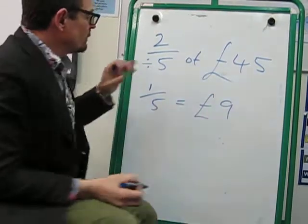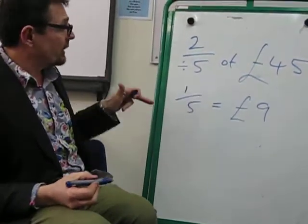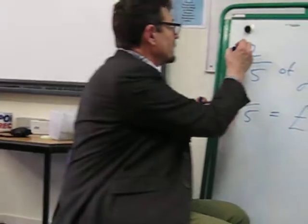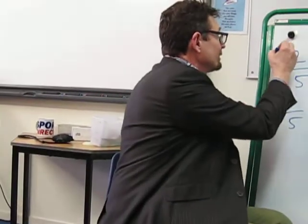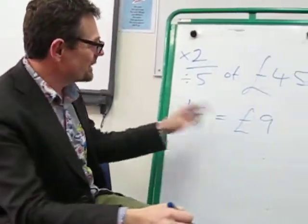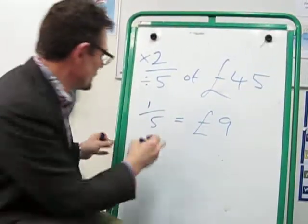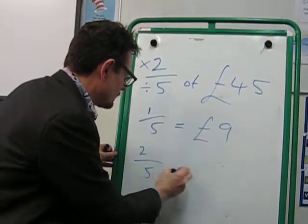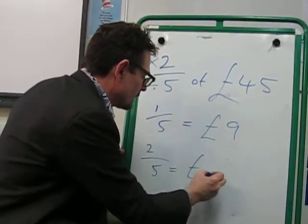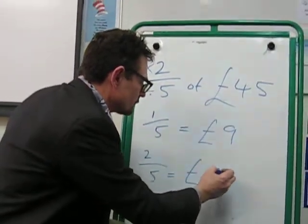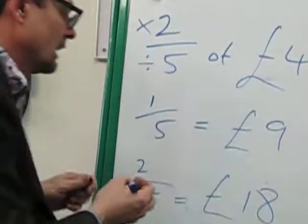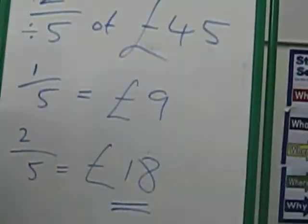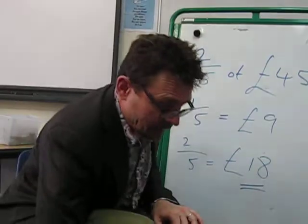But that's only 1 fifth. We want to find 2 fifths of 45. So we need to multiply by the numerator. So 9 times 2 equals 18. Fantastic. So you can go back to your lovely aunt or uncle and say, "I would like 18 pounds because I have found 2 fifths of 45 pounds."